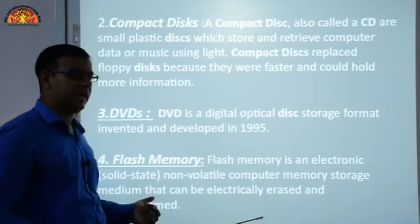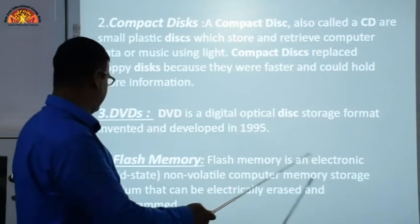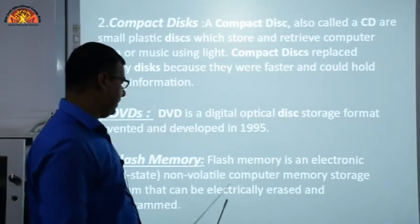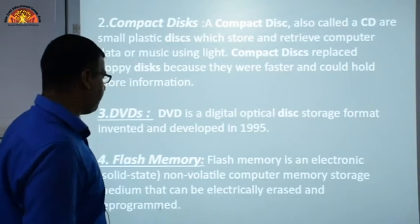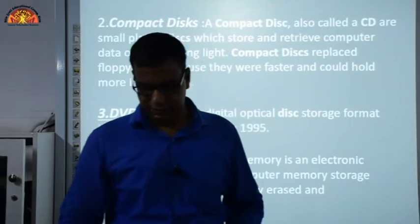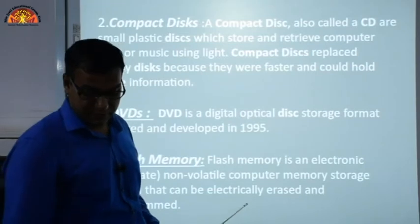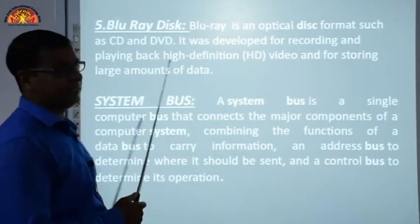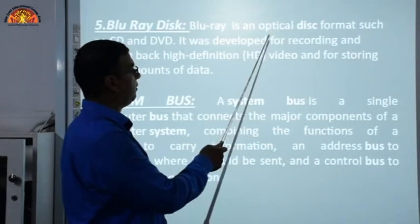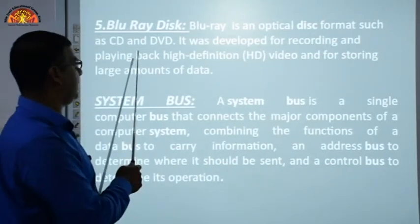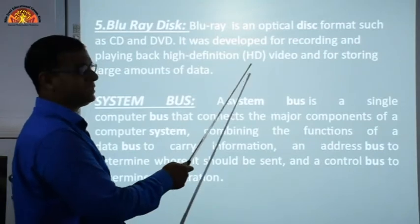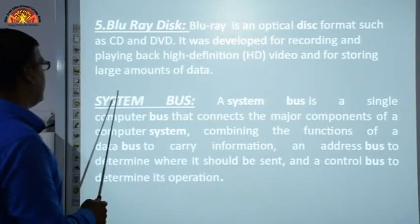Flash memory is an electronic non-volatile computer memory storage medium that can be electrically erased and reprogrammed — you can store and erase data from it. These are all storage devices. Blu-ray disk is another example of a storage device. Blu-ray is an optical disk format like CD and DVD, developed for recording and playing back high-definition (HD) video and storing large amounts of data.